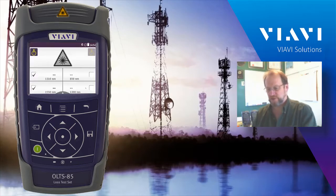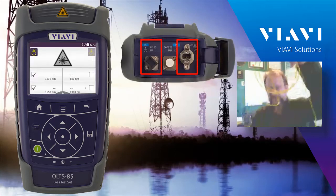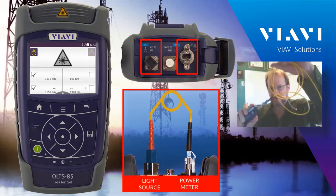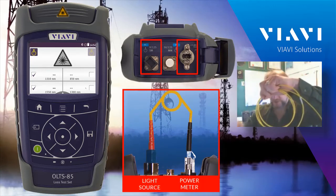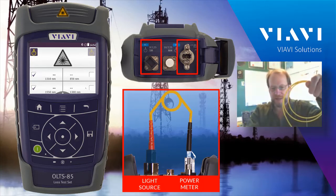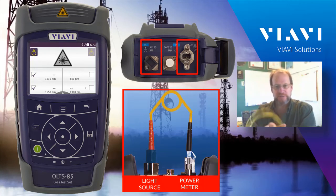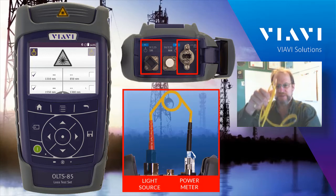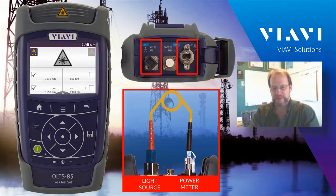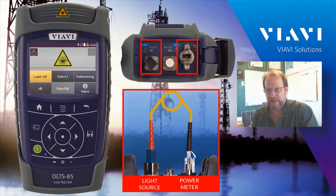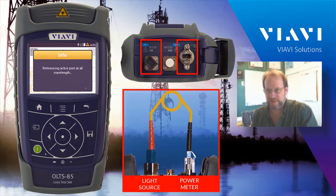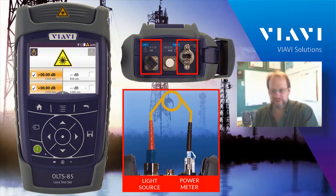The other thing you really need to do is connect your source to your power meter. In this case, I've got a single fiber — you can see I've got the probe plugged in. I've already inspected this fiber; I'm not going to show that here in this quick demo. I'm now connecting my light source to my power meter. I then turn on my laser, press my menu button, and do a reference. When I press that, it says referencing active port at all wavelengths. It just takes a second, and it comes back, and you'll see that everything is at 0 dB.